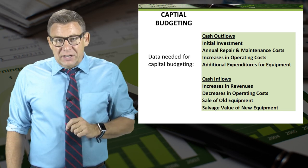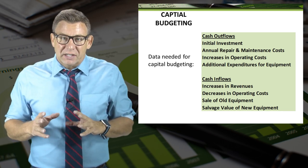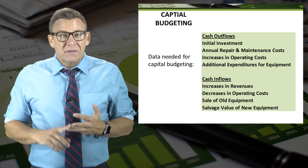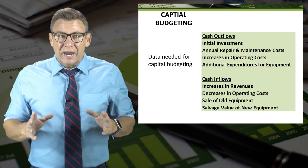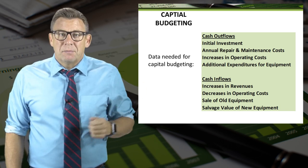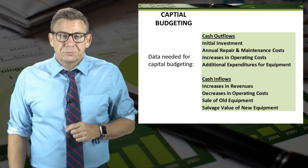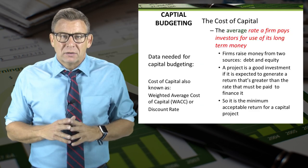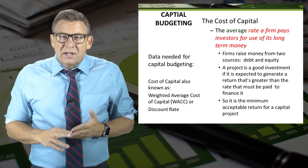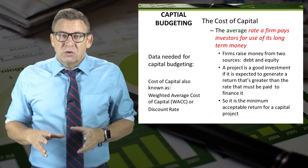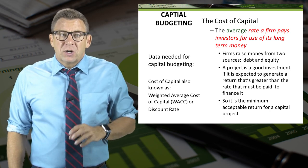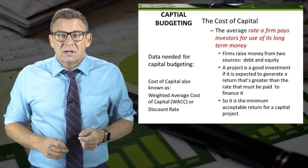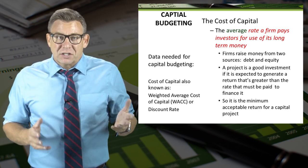The data needed to complete capital budgeting depends a little on the techniques used, but in general we need to look at the cash outflows and the cash inflows created by the potential project. You can see some examples on the slide. The final piece of information needed is the cost of capital — this is the average rate a firm pays investors and creditors for the use of money. Firms finance capital projects with a combination of debt, like loans and bonds, and equity, like stocks and retained earnings.